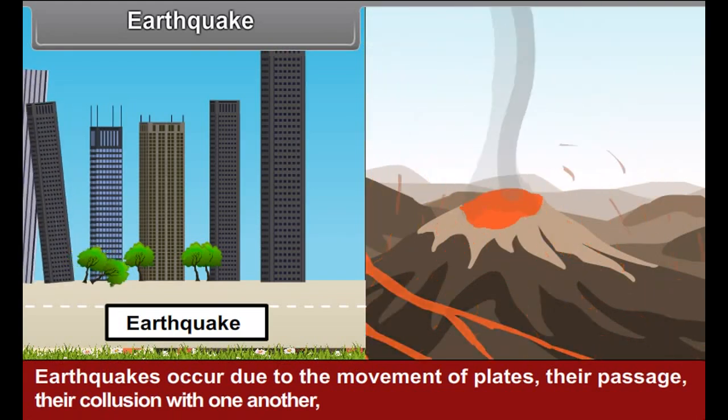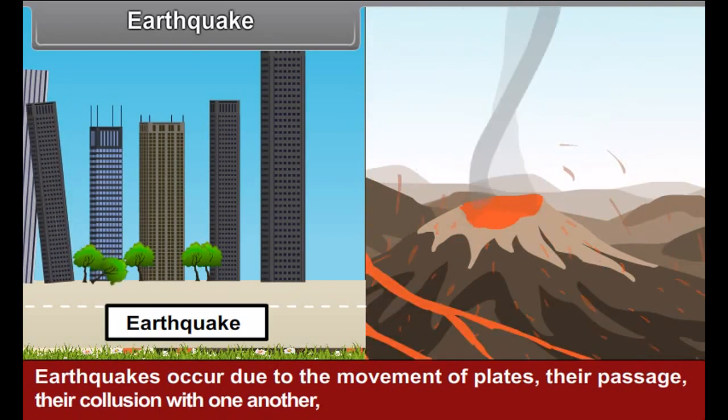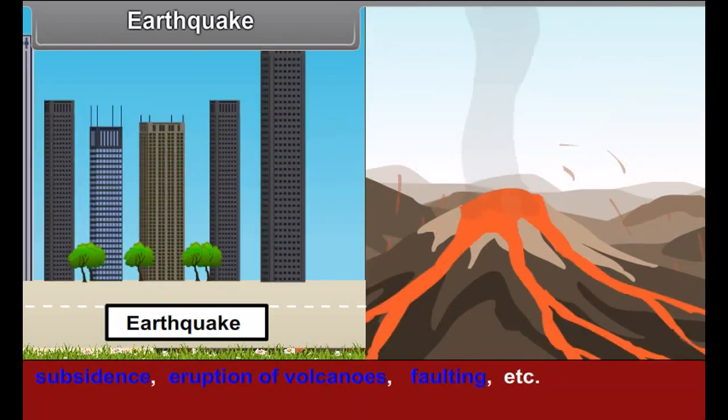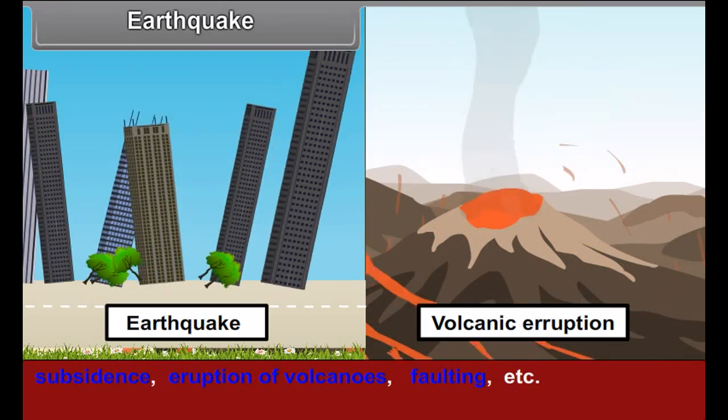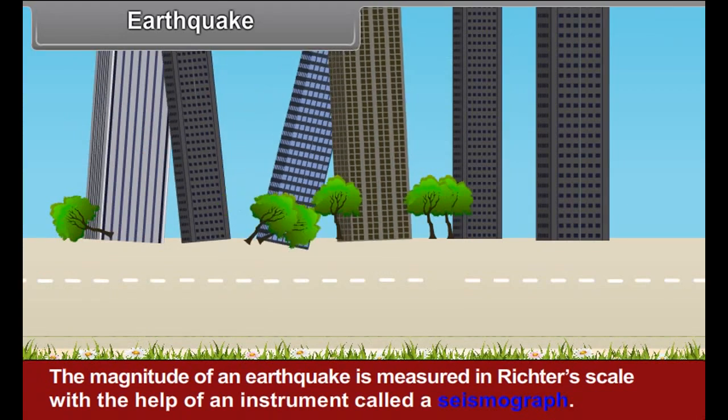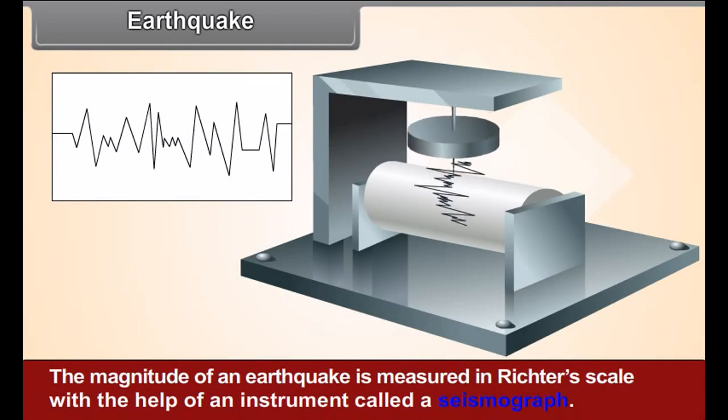Earthquakes occur due to the movement of plates, their passage, their collision with one another, subsidence, eruptions of volcanoes, faulting, etc. The magnitude of an earthquake is measured in Richter's scale with the help of an instrument called a seismograph.